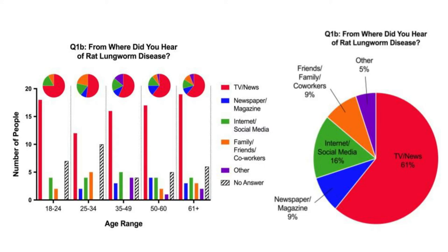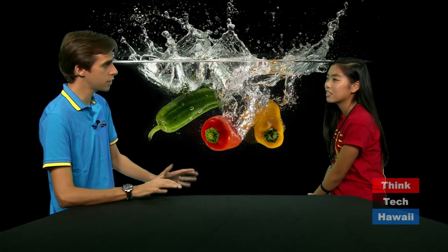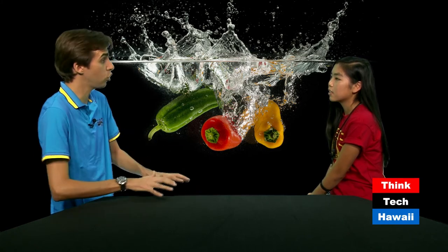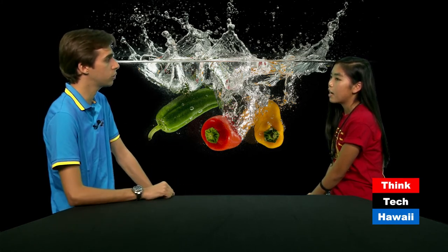In Hawaii, you mentioned 17 cases last year. What about this year? I believe there's already been one confirmed case in February, which shows it's still a problem and not really going away. Which parts of the state are more prone to this disease? Big Island is a major place where rat lungworm disease cases are found. It has also spread to Maui and Oahu, so it affects everyone on the islands.